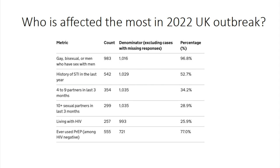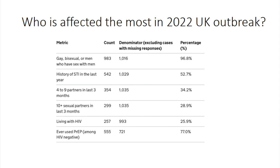In May, I went on the radio to speak about this as someone who'd seen monkeypox before. I kind of regret saying it's not dissimilar, because I then didn't say — but there are some different aspects. It's really the anogenital and oropharyngeal disease, sometimes localised to those areas, not necessarily across all the body, that we were seeing.